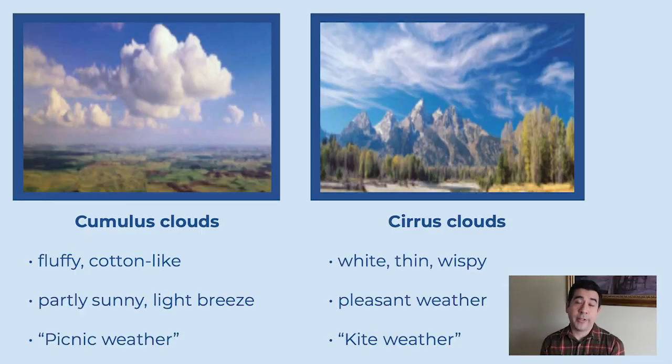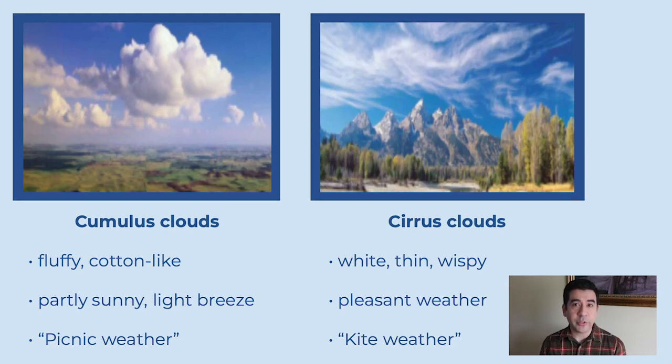Think back to the condensation phase of the water cycle when the water vapor collects and forms clouds. Not all the clouds are going to be the same. Today we're going to review the four most common kinds of clouds that you probably see. One type of cloud is my favorite: the cumulus clouds. Cumulus clouds are fluffy and they look like cotton balls that have been put together.